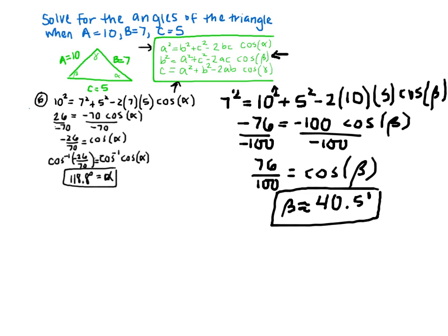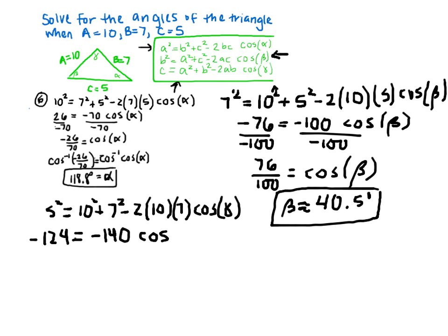The same steps are to be used to find what gamma is. We plug in C squared. So 5 squared equals 10 squared plus 7 squared minus 2AB times cosine of gamma. When simplifying, we find that this equation is negative 124 equals negative 140 times cosine of beta.